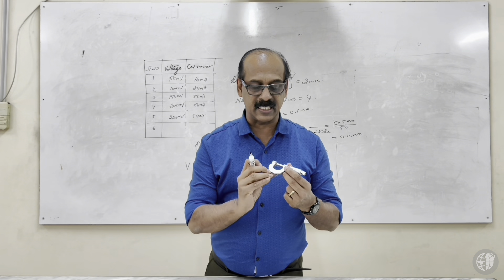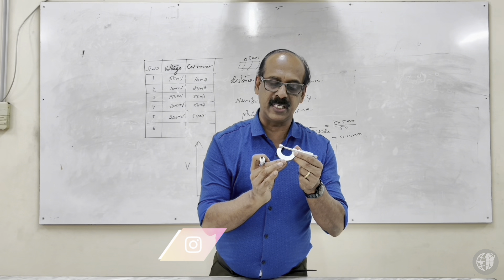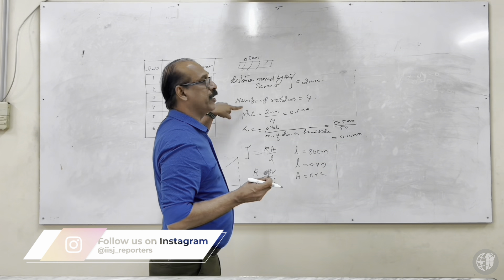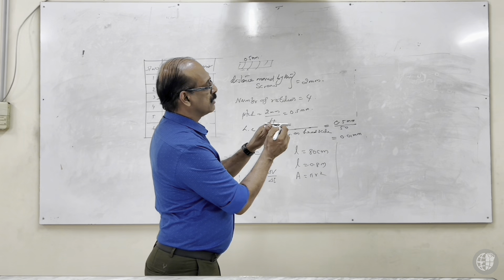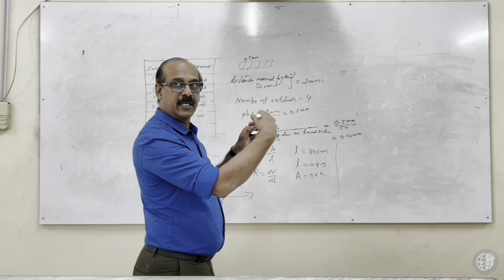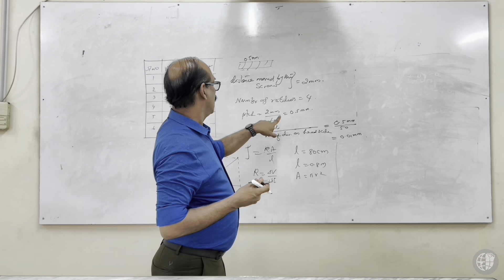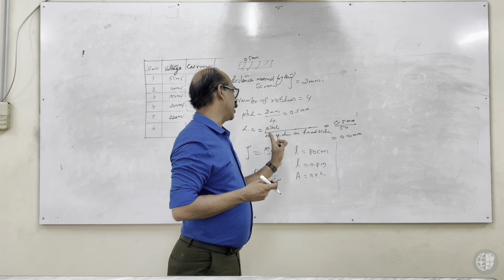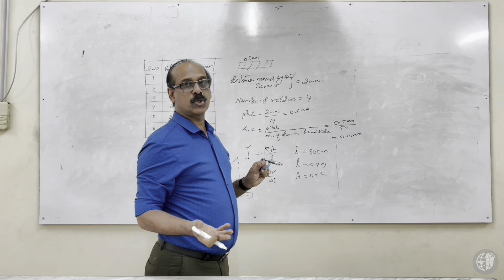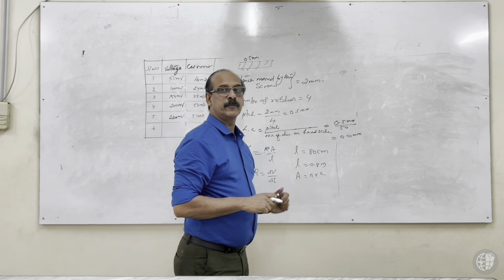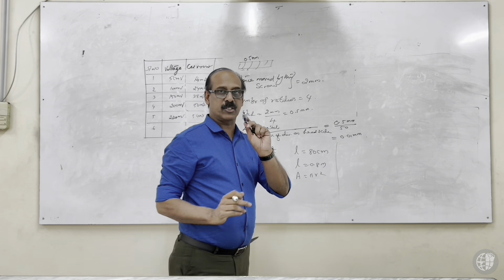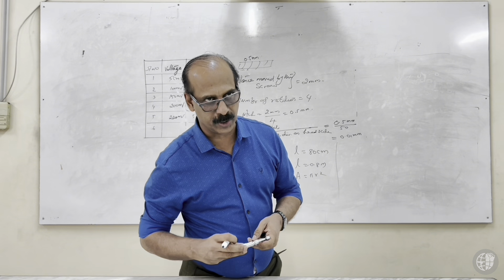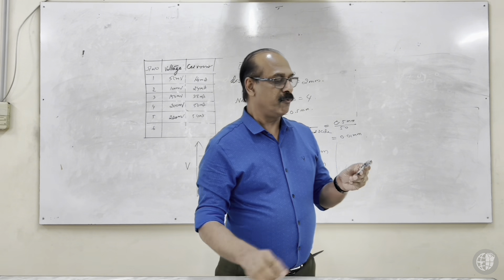You can see it written here: 0.01 millimeters — you can directly use this value. Using this device, the minimum measurement is 0.01 millimeters. Now there is a possibility of zero error. When you bring the ratchet free, if zero exactly coincides with the baseline there is no zero error. But here zero is two divisions down, so there is a zero error.